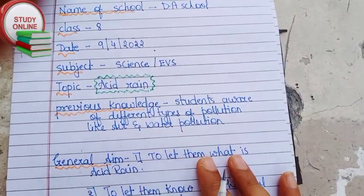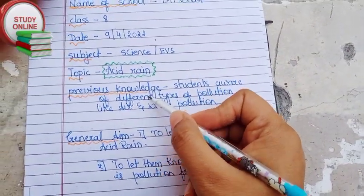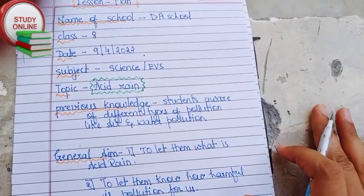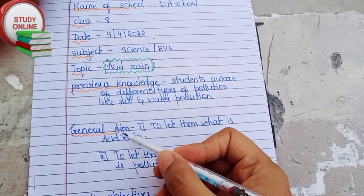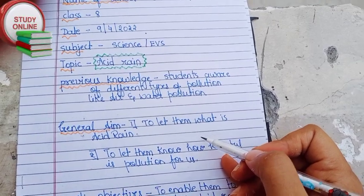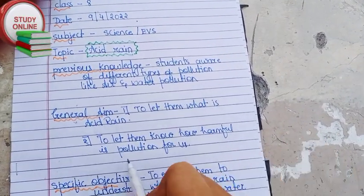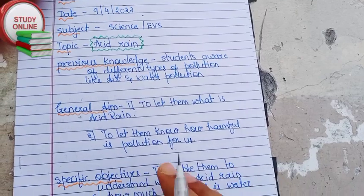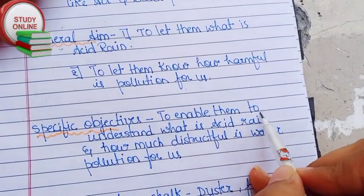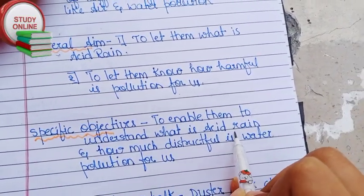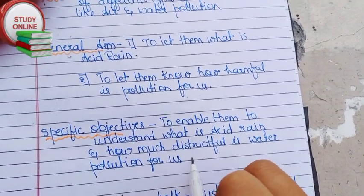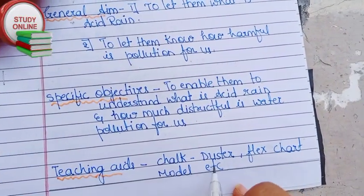Here you can see previous knowledge — students are already aware of different types of pollution like water pollution and air pollution. The general aim is to let them know what is acid rain and how harmful pollution is for us. The specific objectives are to enable them to understand what is acid rain and how destructful water pollution is for us.